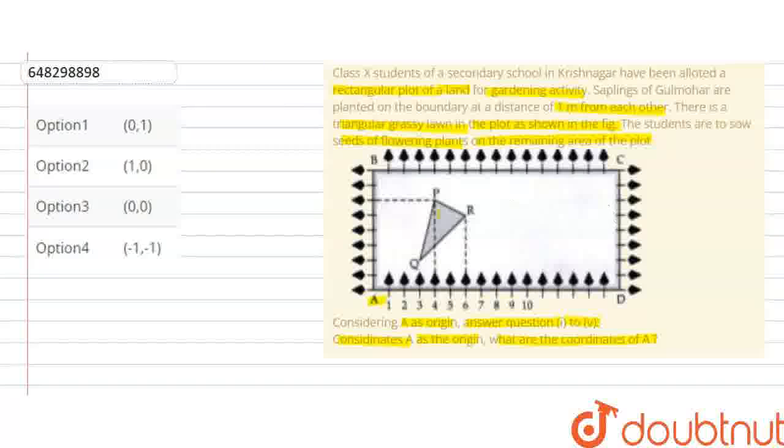देखिए इस question में a rectangular plot है। बीच में एक triangular lawn का portion है। ये x-axis है और ये y-axis है। A को कहा जा रहा है कि considering A as origin। सबसे पहली बात कि origin क्या होती है - Origin के coordinates fix होते हैं। Origin के coordinates (0,0) होते हैं। अगर हम इस diagram को देखें तो हमारा A किस position पे?